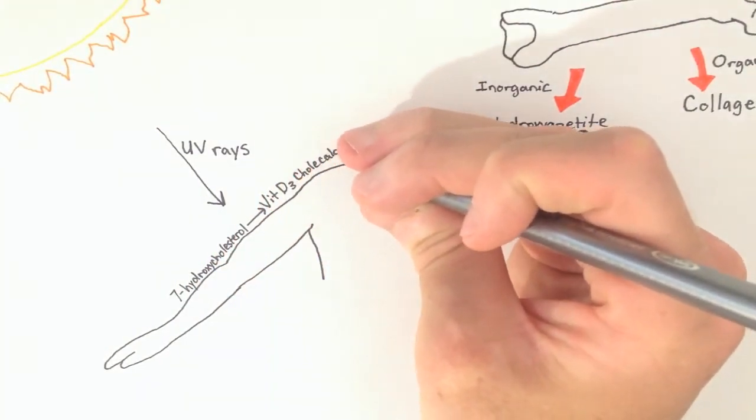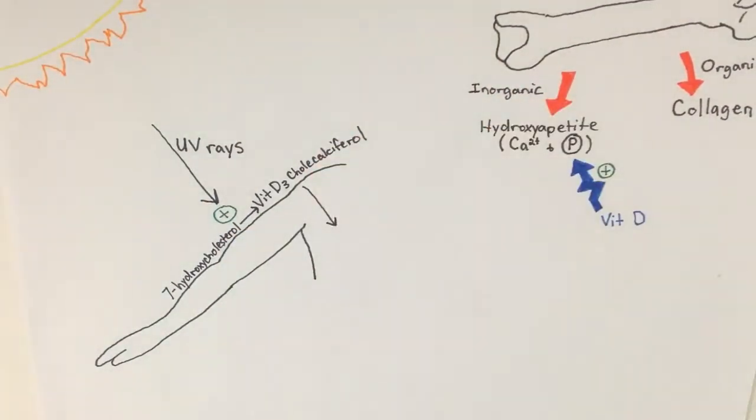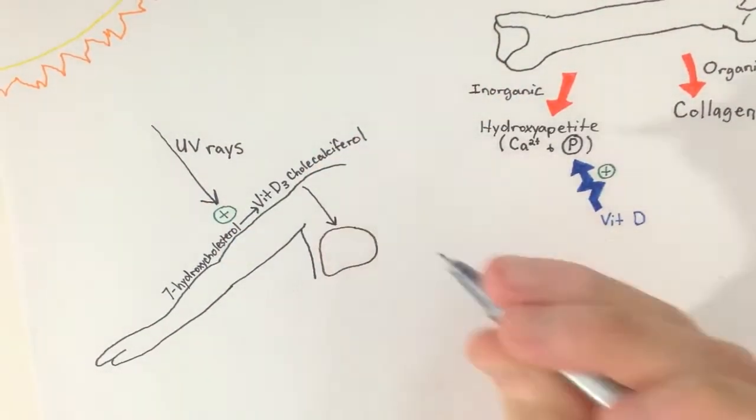So the UV rays from the sun shine down on our skin and something happens. A component on our skin, 7-hydroxycholesterol, gets converted to vitamin D3-cholecalciferol, an inactivated form of vitamin D.